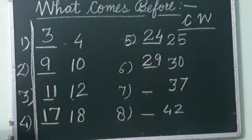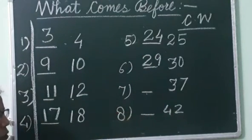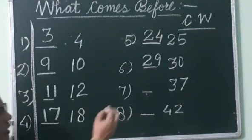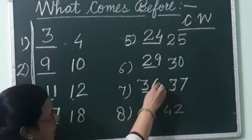Then before 37? 31, 32, 33, 34, 35, 36, 37. So what comes before 37? 36.